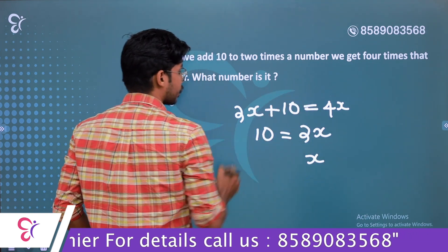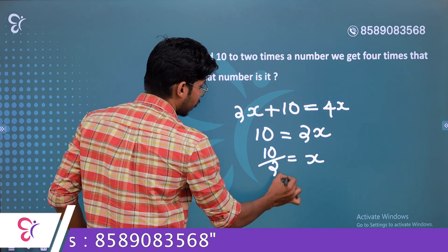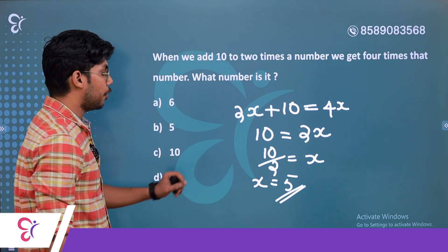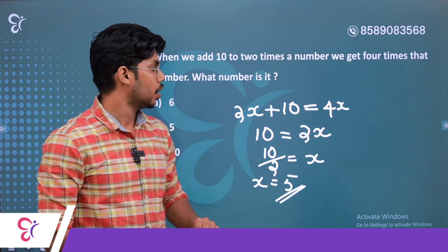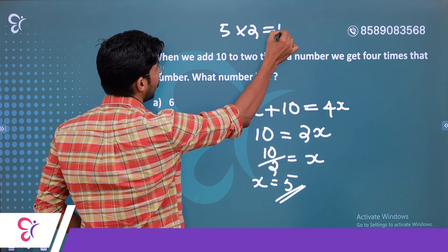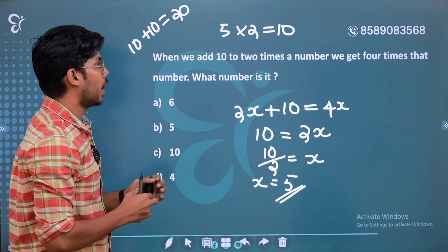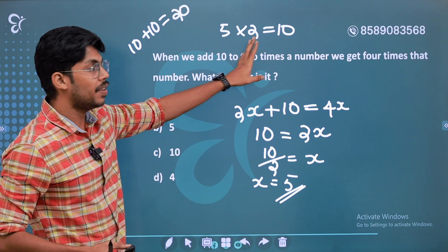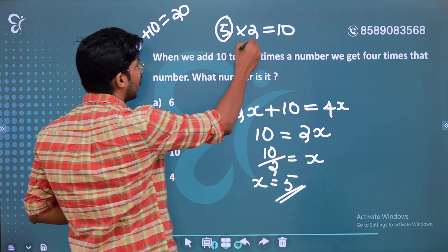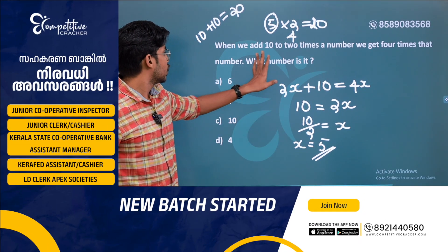Solving: 2x plus 10 equals 4x. Then 10 equals 4x minus 2x, which gives 10 equals 2x. Therefore x equals 5. The question is correct.